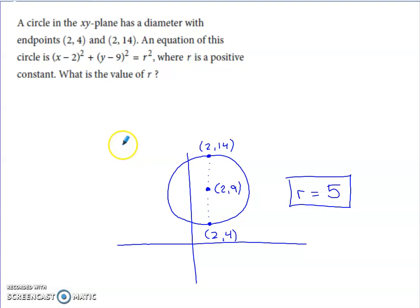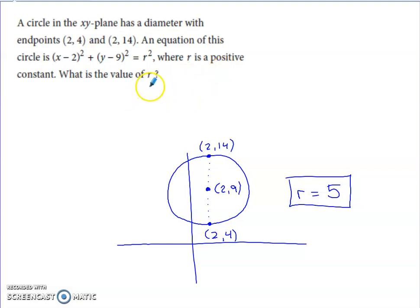A circle in the XY plane has a diameter with endpoints (2, 4) and (2, 14). An equation of this circle is given, but we don't know what R squared is — we don't know what's on the other side. It tells us it's a positive constant and asks for the value of R. Taking into account what we discussed, the center of the circle should be (2, 9), which I've plotted.